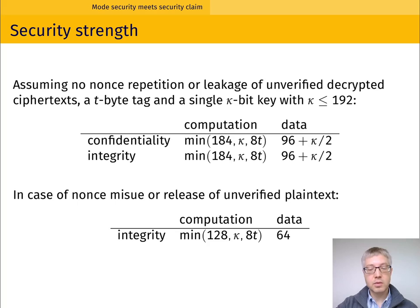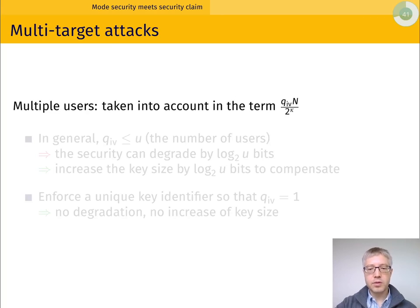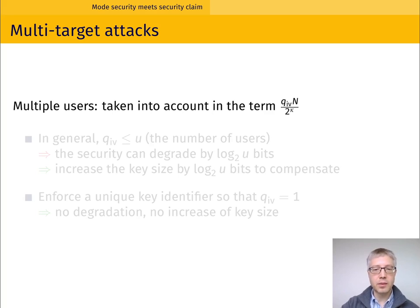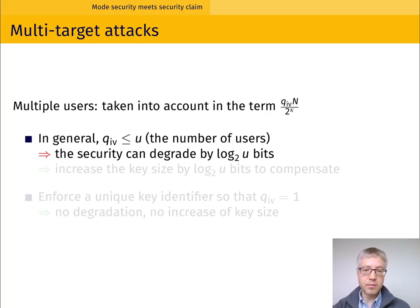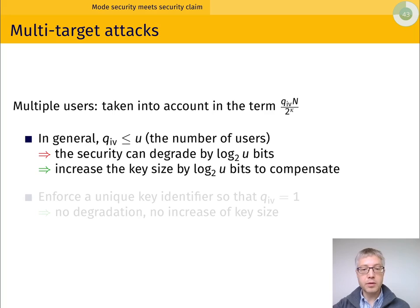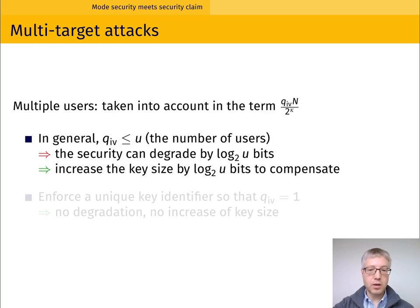In terms of offline complexity, we can still reach 128 bits of security, and for data complexity, 2 to the power 64 blocks. For multi-target attacks, these are accounted for in the term q_iv times n over 2 to the kappa, where kappa is the key size in bits, n is the time complexity, and q_iv is the number of keys for which we use the same IV. Since q_iv is upper bounded by u, the number of users, security can degrade by at most log u bits. We can compensate by increasing the key size by log u bits to restore the security level of single-target attacks.